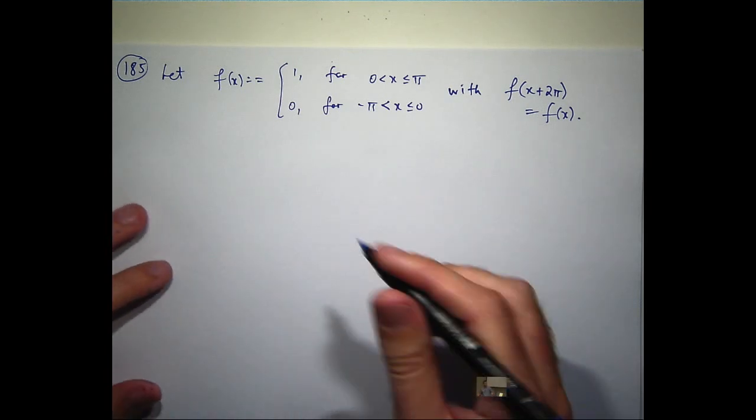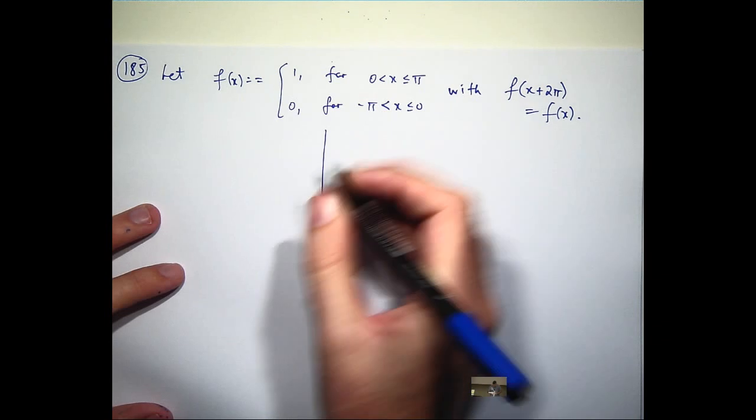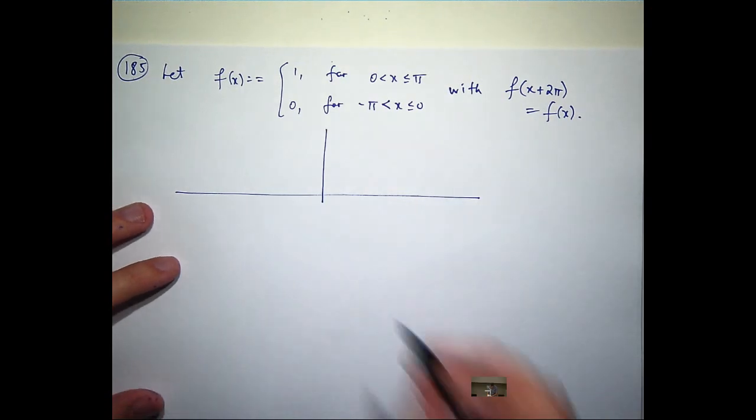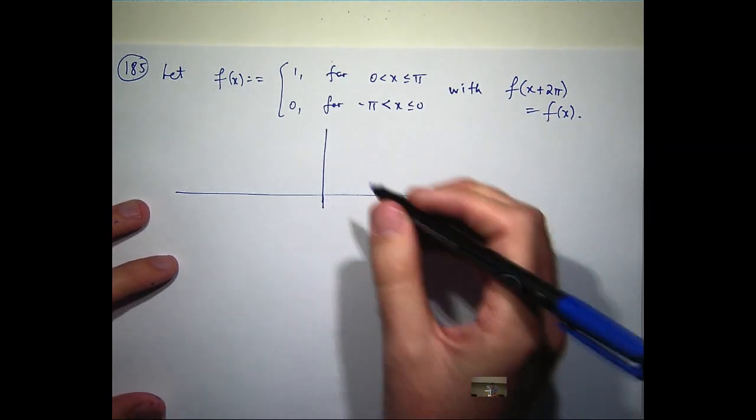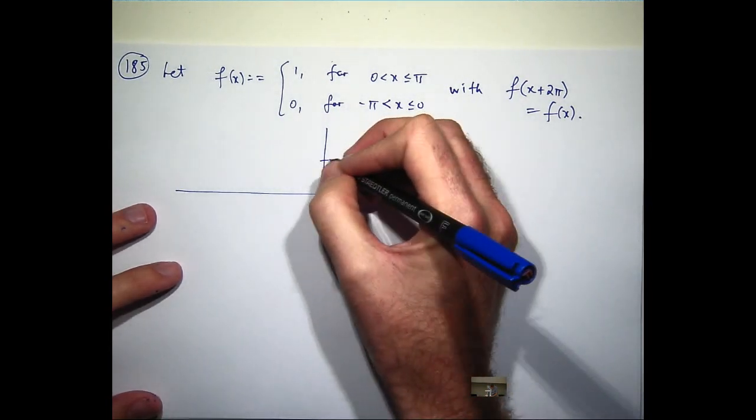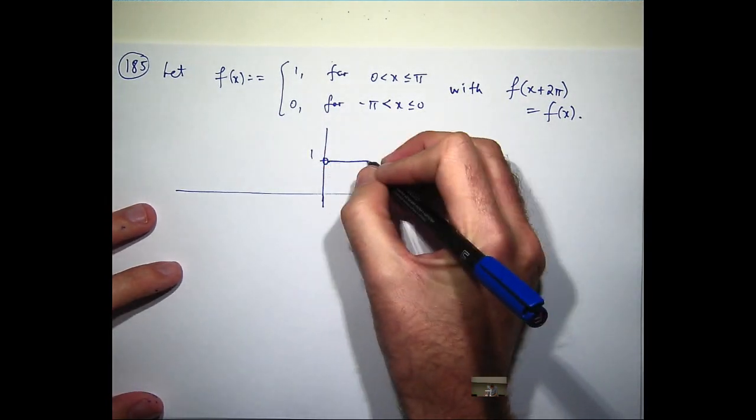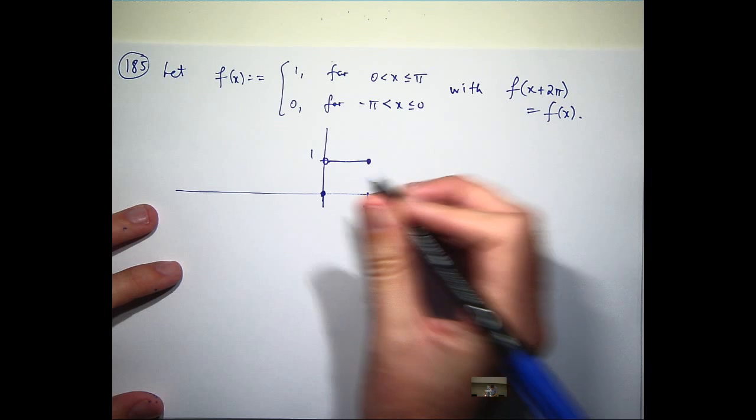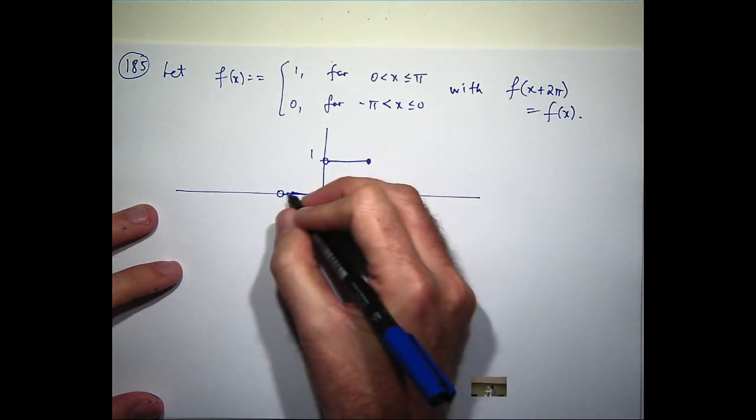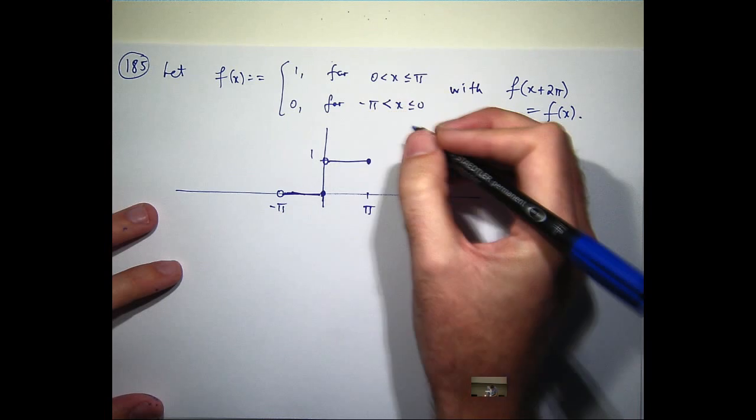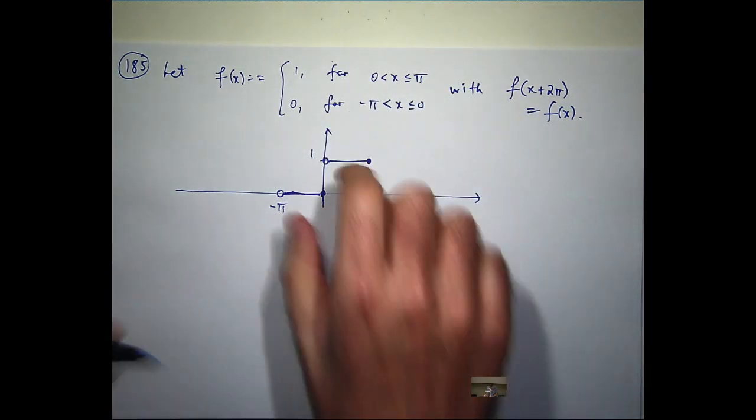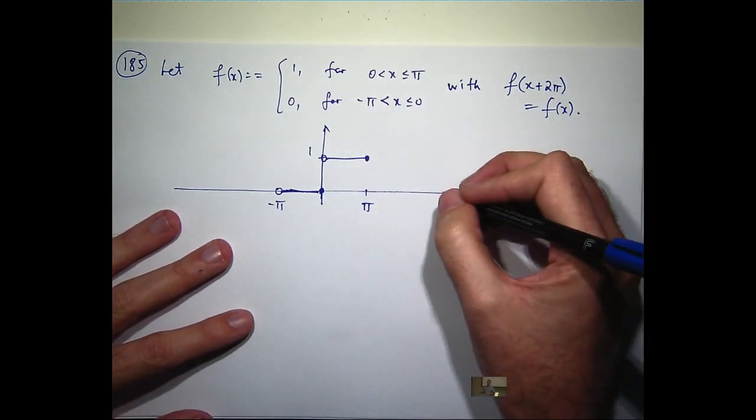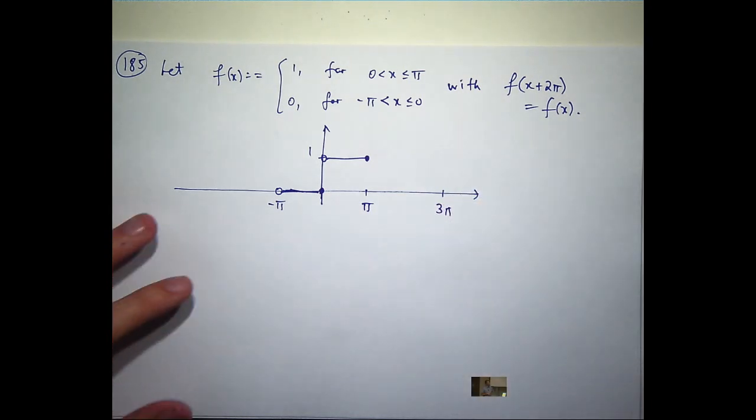It's periodic with period 2 pi. Let's draw the function. So the way I'm going to do it, I'm going to draw the function on the interval minus pi to pi first, and then I'll take that and copy and paste it.